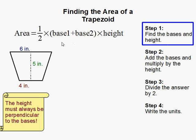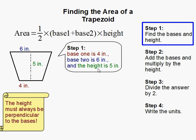If you take a look at our equation, there are two bases in the trapezoid, and the bases are the sides that are parallel to each other. In this example, we have base 1 is 4 inches and base 2 is 6 inches.